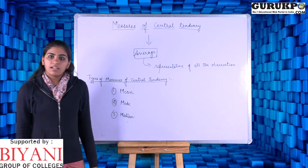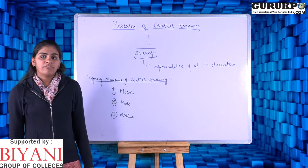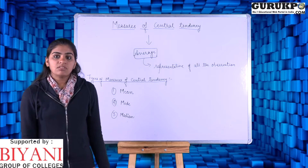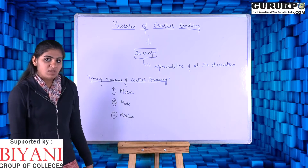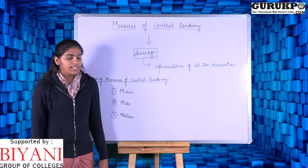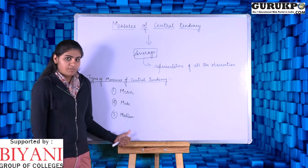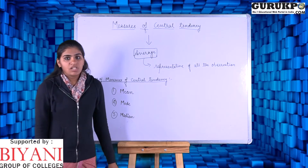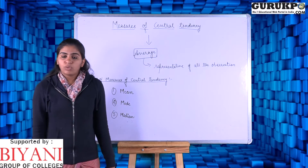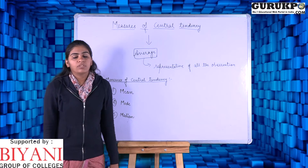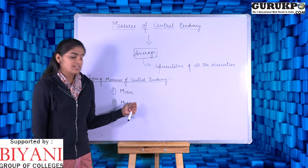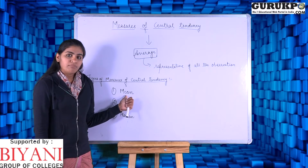There are three types of central tendency measures. First is mean, another one is median, and the third is mode. In this lecture, I will cover all about the measures of central tendency of mean.